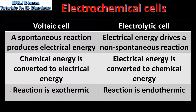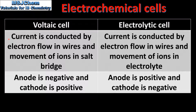In a voltaic cell the reaction is exothermic, and for an electrolytic cell the reaction is endothermic. In a voltaic cell current is conducted by electron flow in the wires and movement of ions in the salt bridge.